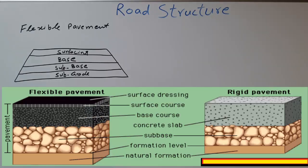The final part is surfacing, which is basically the top layer of the road. This part of the road creates an equal level surface and also acts as a cover to the other layers beneath it. The thickness of surfacing is normally one to two inches.